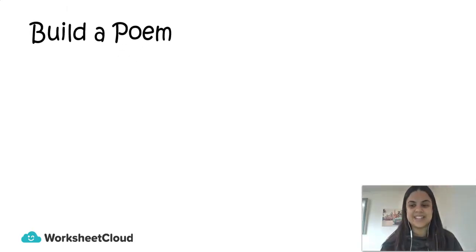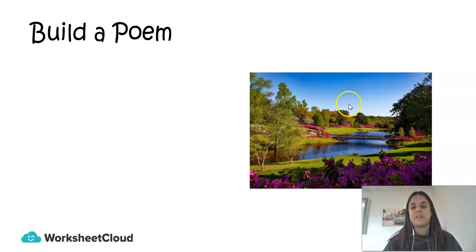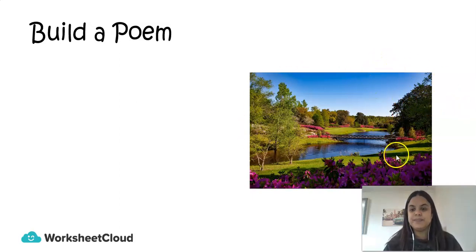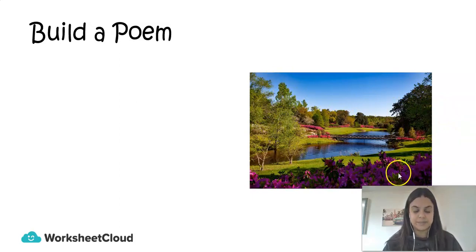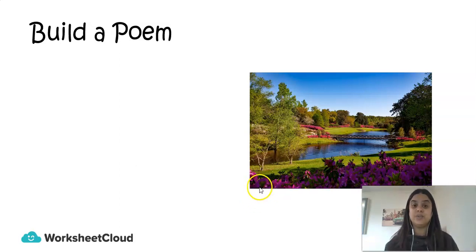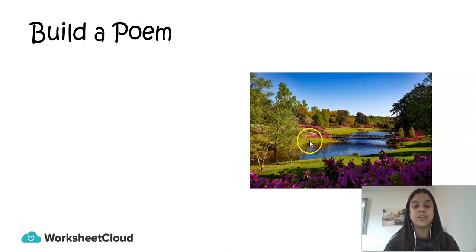Let's move on to building a poem — that's our activity for the day. Over here we have a picture. In this picture, as you can see, there is a river running through a beautiful garden. There are purple flowers all around, trees, and lots of greenery. I want you to look at this picture and see how you would describe it. Write down the words on your page — all the colors and descriptions you can think of for this picture — and let's see if we can build a poem together.